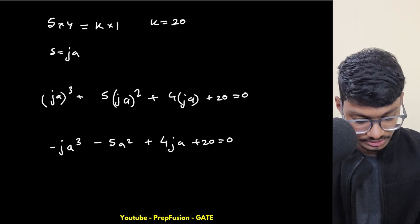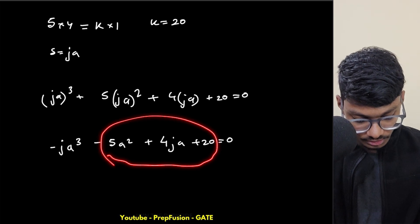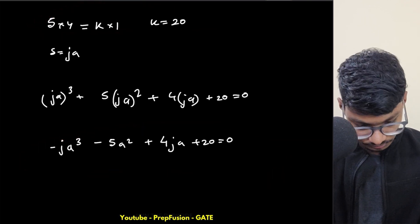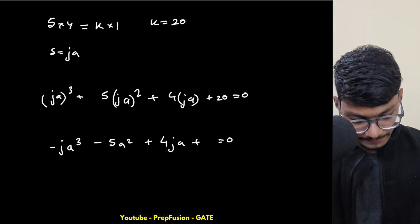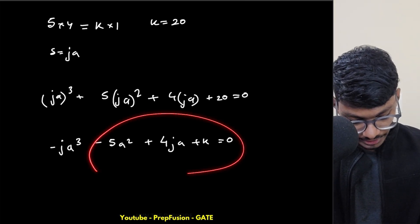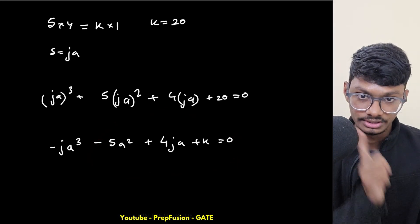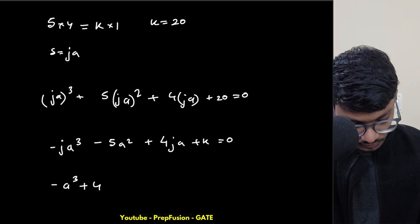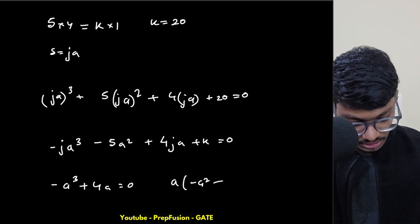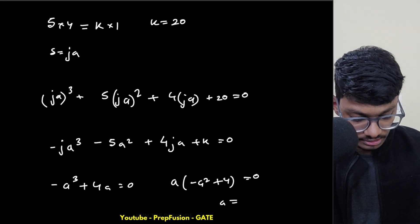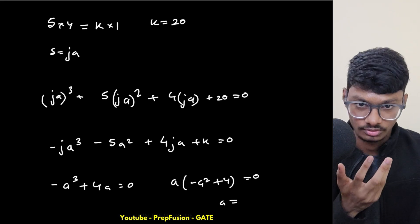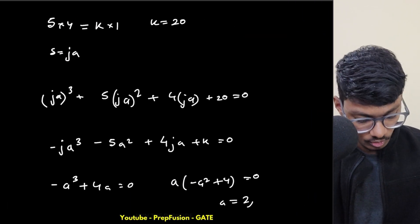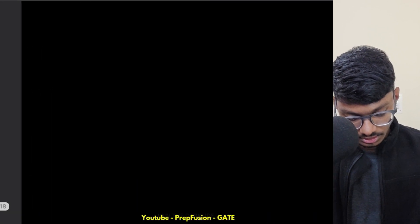Now we equate the real and imaginary parts. Equating the imaginary part to zero: -a³ + 4a = 0, so a(-a² + 4) = 0. This gives a = 0 or a = 2. Since a represents a frequency on the positive imaginary axis, a is positive, so a is either 2 or 0.